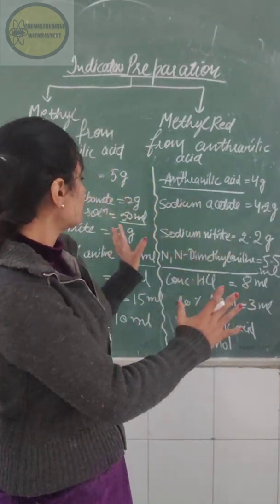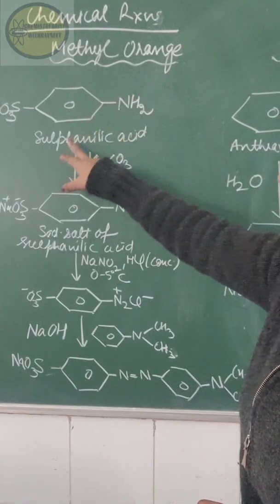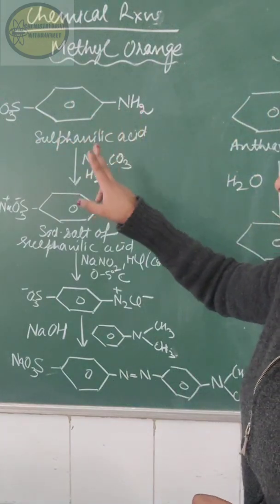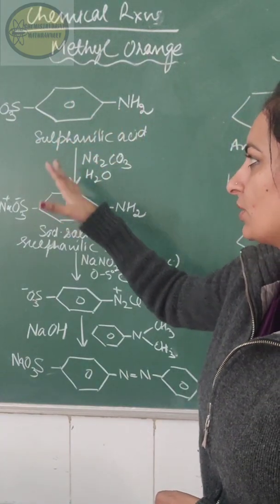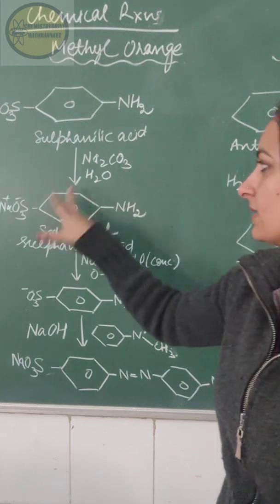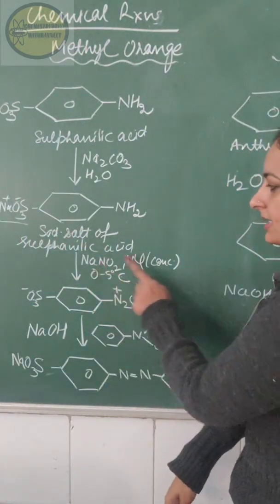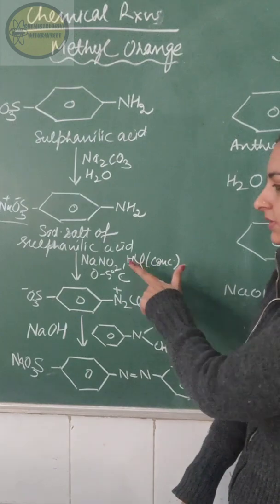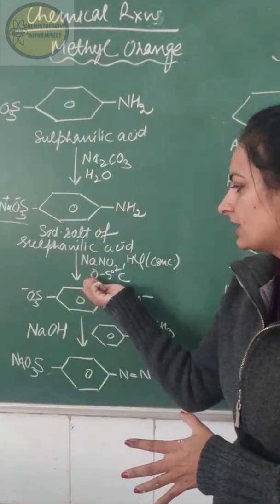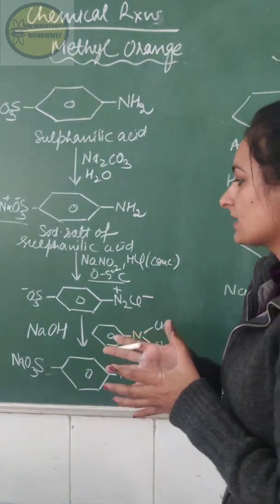For methyl orange preparation, sulfanilic acid has a sulfonyl group at the para position with respect to the NH2 group. We add sodium carbonate and water to dissolve the sulfanilic acid and convert it to the sodium salt of sulfanilic acid. After that, we add concentrated HCl and then sodium nitrite. Make sure to maintain the temperature at 0 to 5°C by keeping the reaction flask on an ice bath. This is the diazotization reaction.